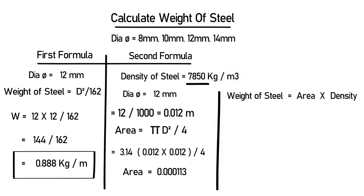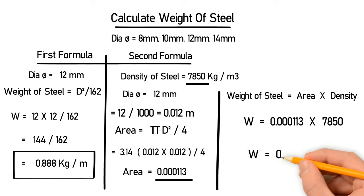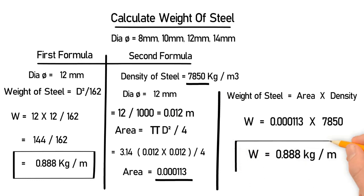Let's put both values into the main formula. W = 0.000113 × 7850, which gives you 0.888 kilogram per meter. You can see the result for both formulas is the same. You can use any one of them to calculate the weight of steel. Thank you so much.